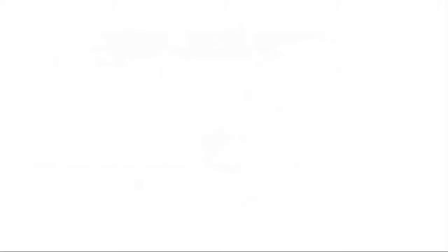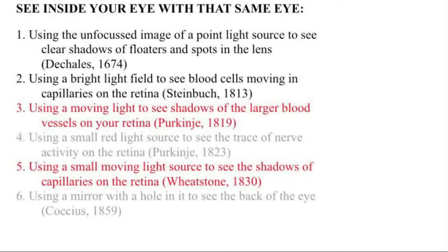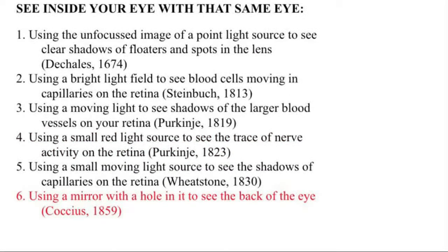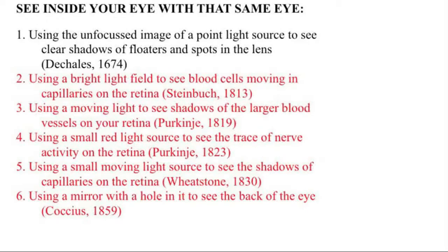The other techniques allow you to see blood moving in capillaries on the retina, shadows of the blood vessels on the retina, nerve activity on the retina, and the back of the eye. Now let's tackle the first and oldest technique for seeing inside your own eye with that same eye, starting with a little science history.